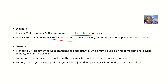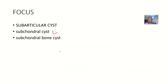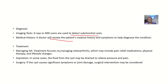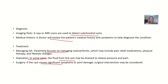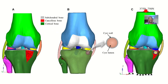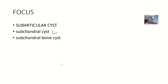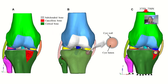To manage this condition: if osteoarthritis is causing it, focus on treating osteoarthritis — if you treat the cause, the disease will go away. Aspiration is another option; in some cases, the fluid from the cysts may be drained to relieve pressure and pain. Surgery may also be considered if the cyst causes significant symptoms or joint damage. That's it for subarticular cysts, also known as subchondral bone cysts — causes, symptoms, diagnoses, and treatments.